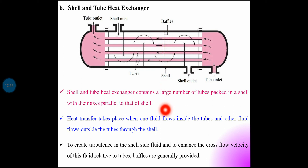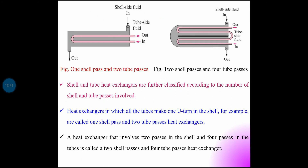Here are baffles. Baffles are used to create turbulence in the shell-side fluid and to enhance the cross flow velocity of the fluid relative to the tubes. Baffles deflect the shell-side fluid, changing its direction, producing fluid motion, increasing cross flow velocity, and thus turbulence, which enhances heat transfer. Shell and tube heat exchangers are further classified according to the number of shell and tube passes involved.